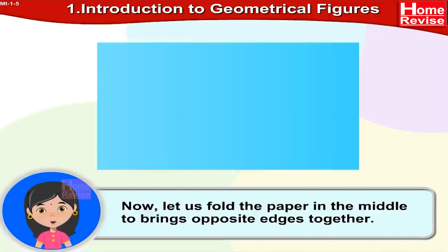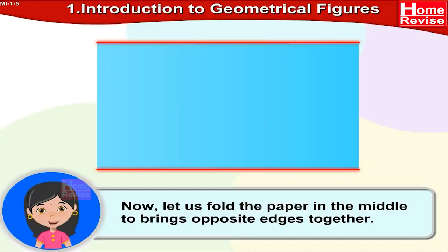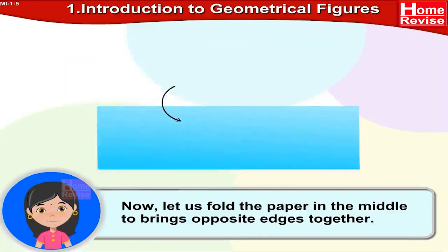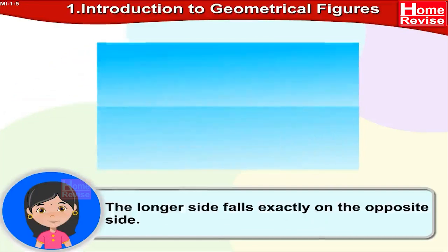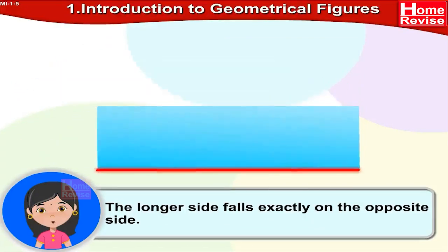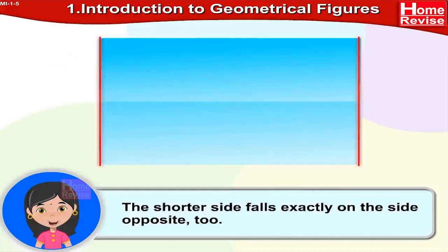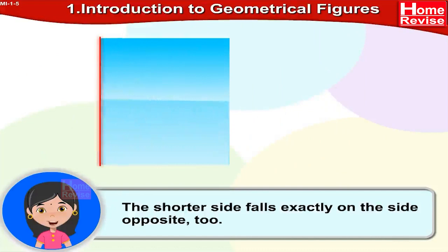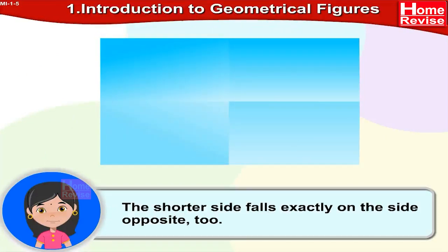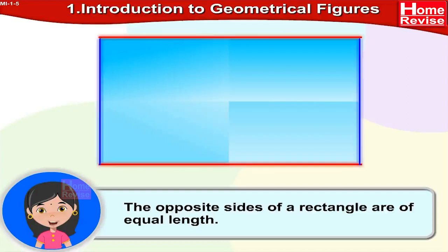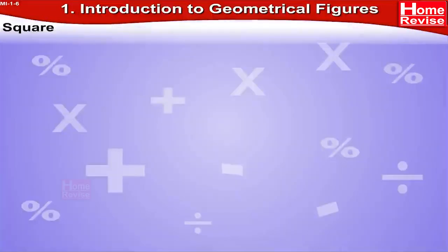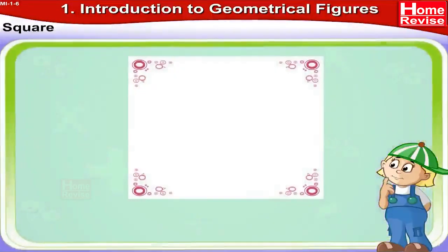Now let us fold the paper in the middle to bring the opposite edges together. What do we see? The longest side falls exactly on the opposite side, and the shorter side falls exactly on the opposite side too. So the opposite sides of a rectangle are of equal length. Did you notice that?